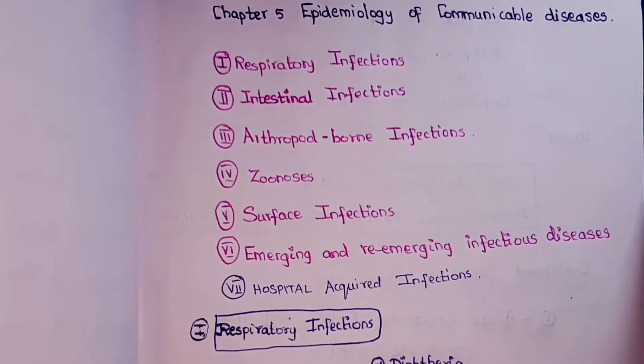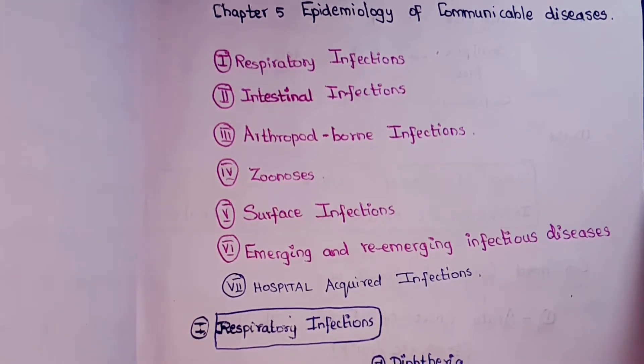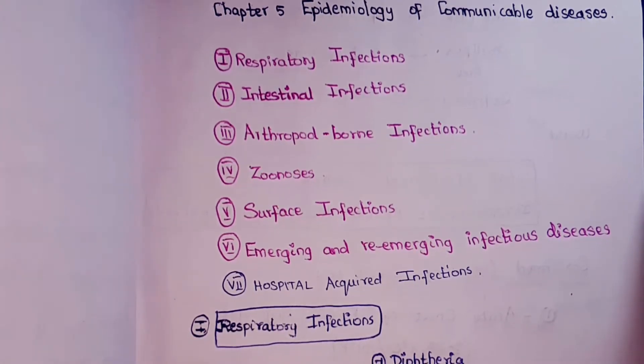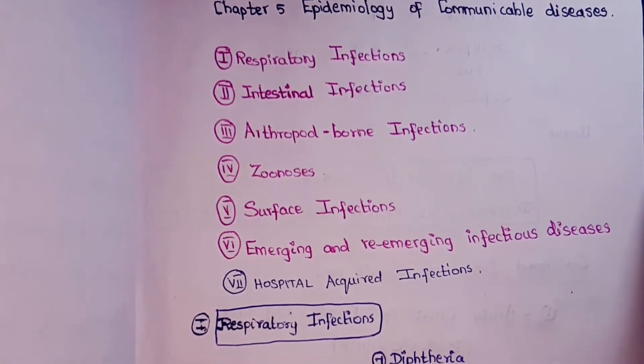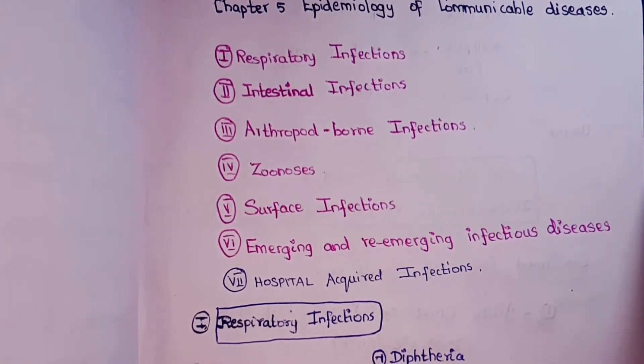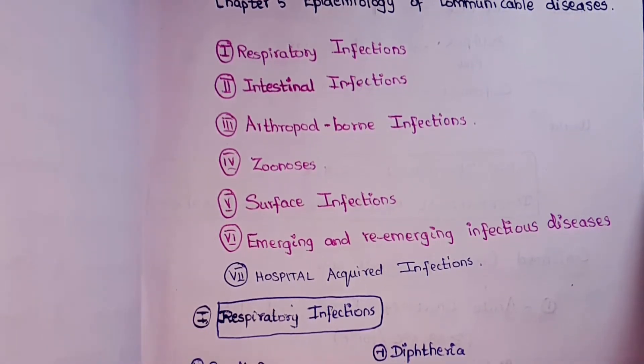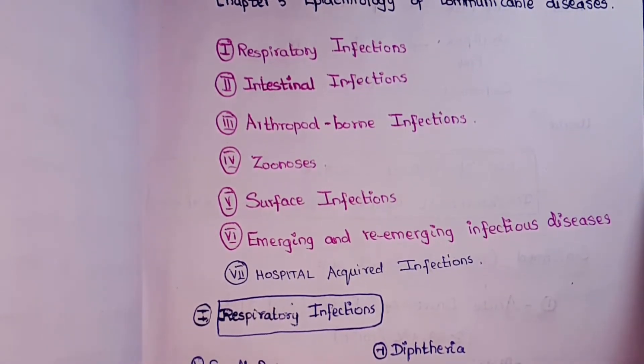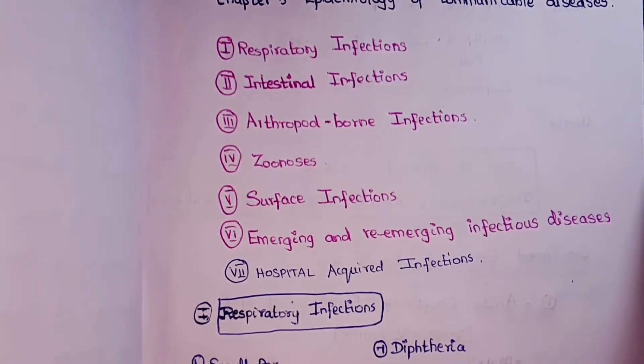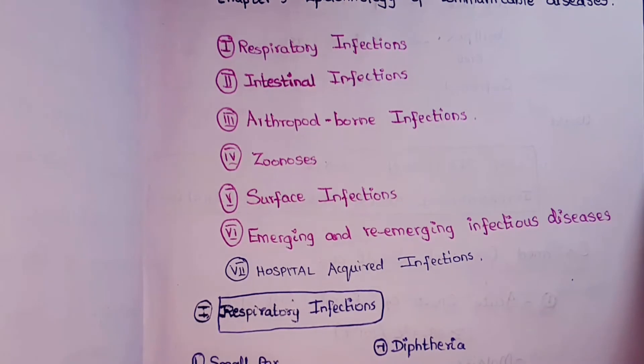Communicable diseases may be classified under 7 classifications: respiratory, intestinal, arthropod-borne, zoonosis, surface, emerging and re-emerging, and hospital acquired.